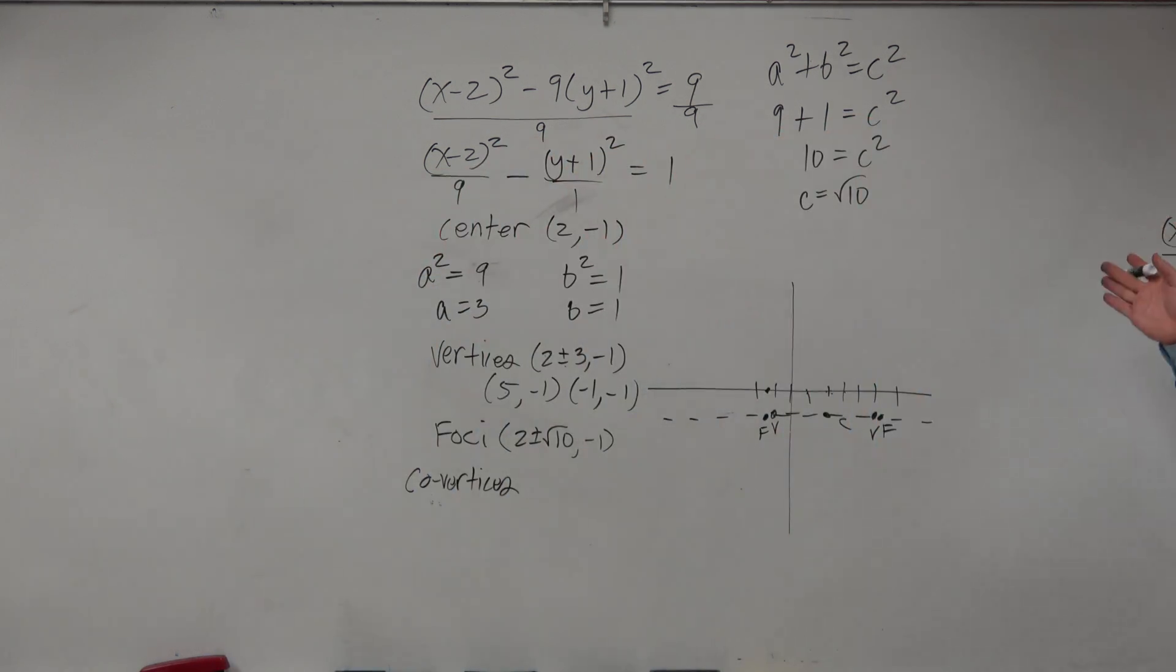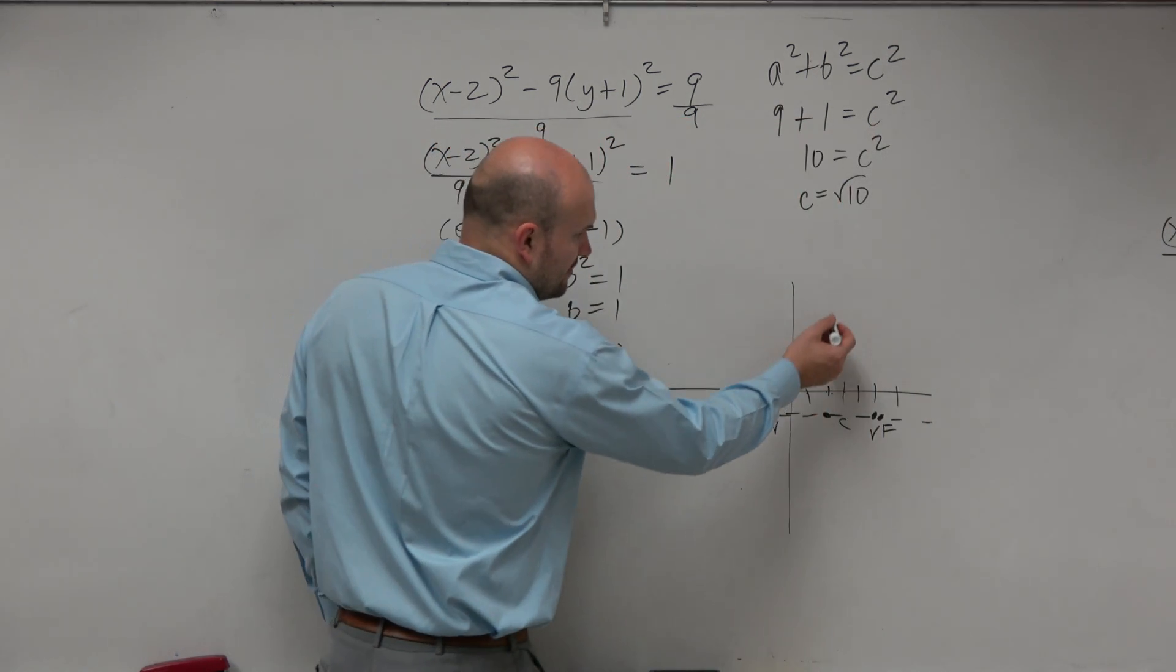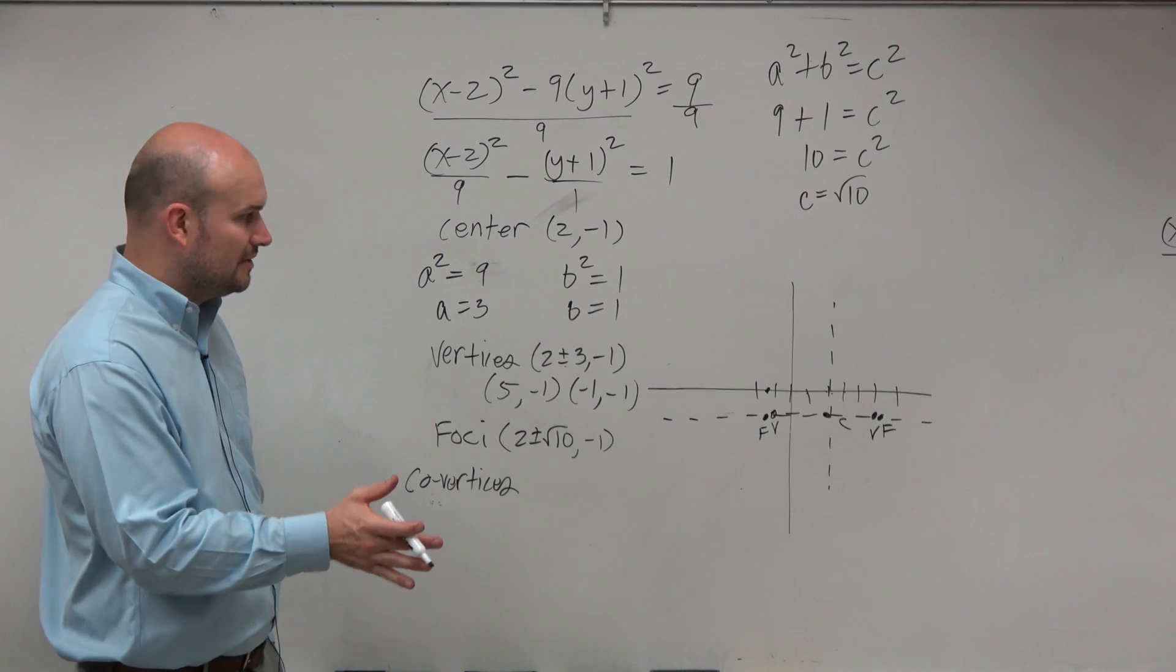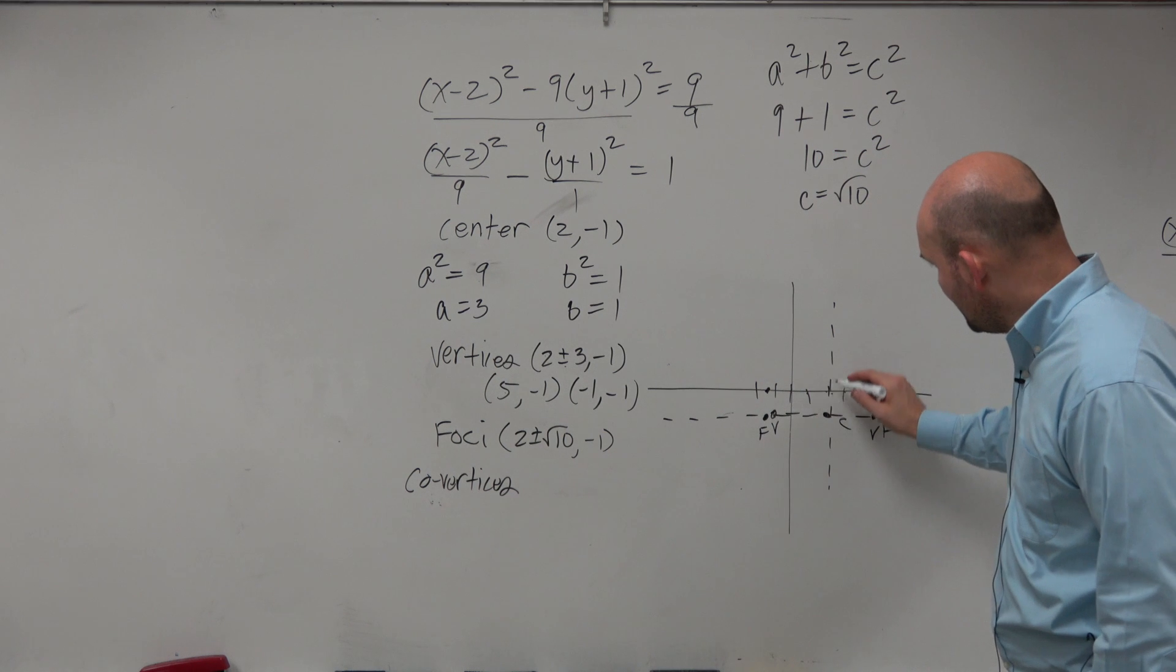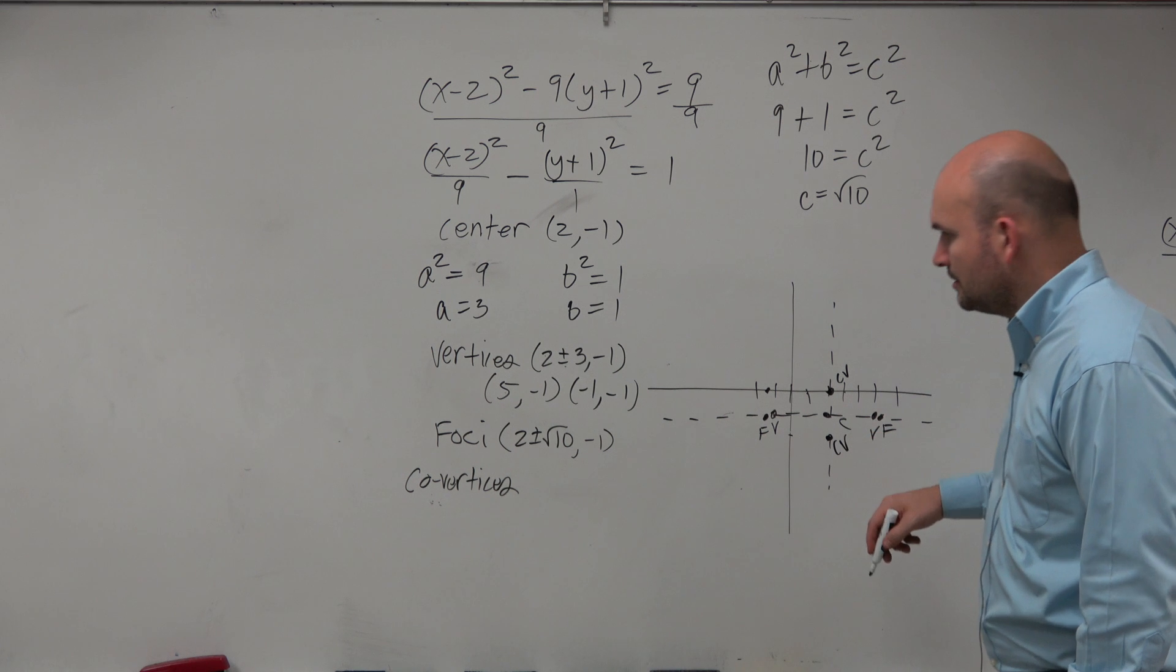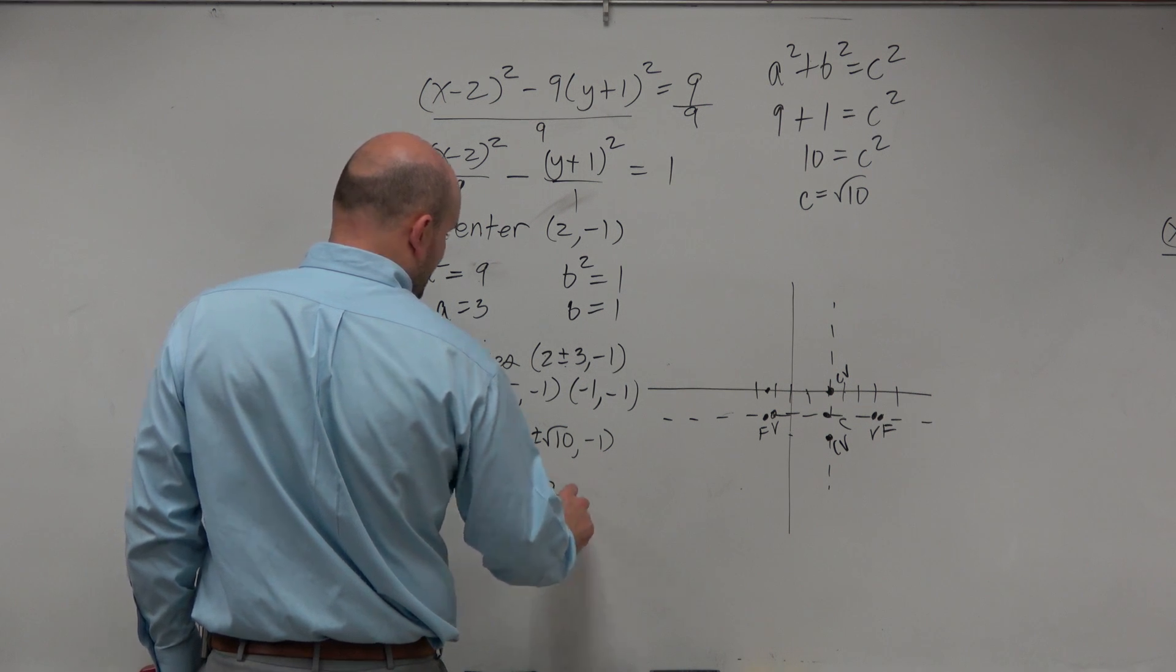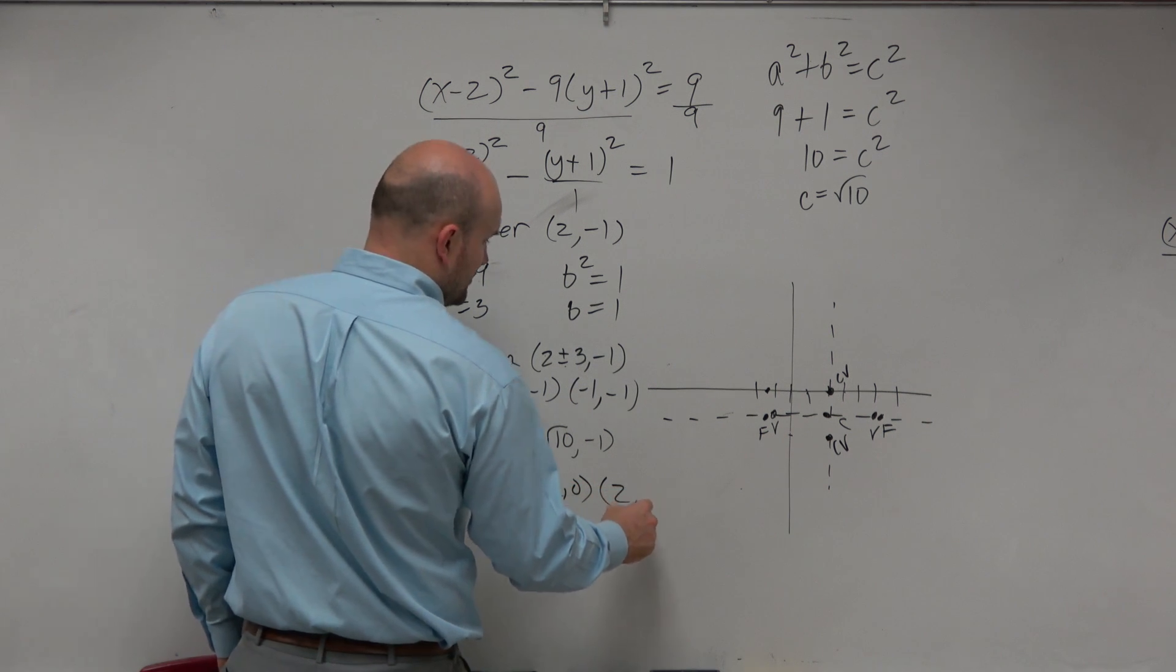Now, let's go and find the co-vertices. So the co-vertices are not on the transverse axis. They're on the conjugate axis. Meaning, now, they're on this axis, up here. Right? They're perpendicular to the transverse axis. So they're going up and down. Well, how far are they going up and down? 1. So you could easily just go from the center. You can go up 1, co-vertice (2, 0), and down 1, co-vertice. These are both at the value of 2, and then you're at (2, 0), and (2, -2).